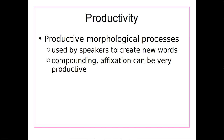Affixation — when we take an affix and attach it to another word to form a new word — is also a morphological process. It's a productive morphological process when we use it to create a new word or new meaning. Compounding, where we take two words and combine them and they get a different meaning, is a good example of a productive morphological process.